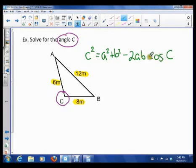So if I wanted to solve for angle A for example, then it would have been A squared is equal to B squared plus C squared minus 2BC.